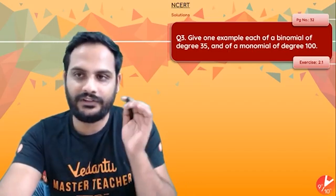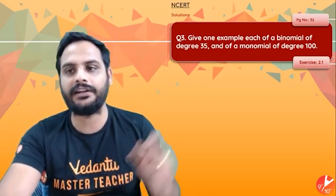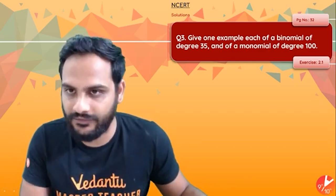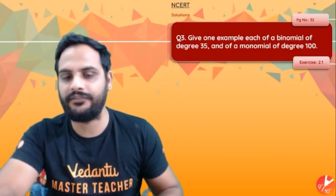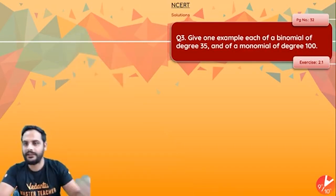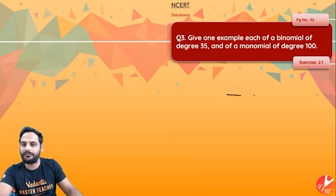The first question which we have for you in this class is on page number 32 of NCERT, exercise 2.1. Give an example each of a binomial of degree 35 and a monomial of degree 100. So you want a binomial of degree 35 and a monomial of degree 100.